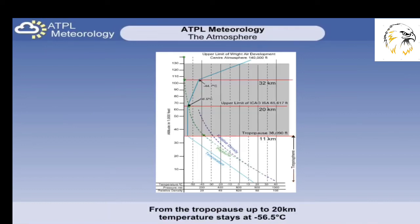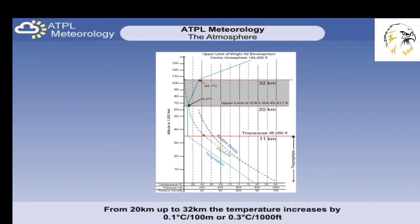From this point onwards we have the stratosphere, and ISA assumes the temperature within the first part of this layer remains constant at minus 56.5 degrees Celsius, up to 20 kilometers, or 65,617 feet. From 20 kilometers and upwards to 32 kilometers, we have a gradual increase in temperature by 0.3 degrees Celsius per 1,000 feet, or 0.1 degrees Celsius per 100 meters. This is the part of the stratosphere that contains the gas ozone, which causes the surrounding air to warm.